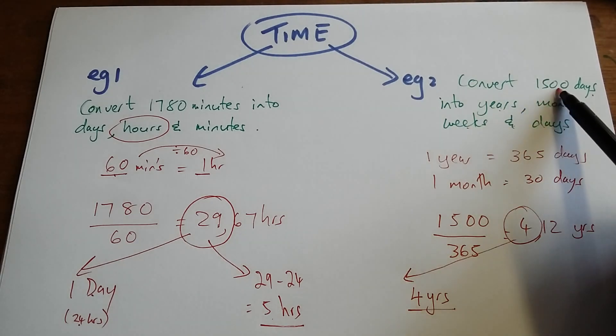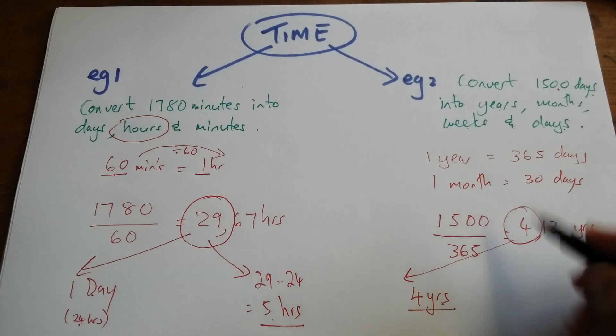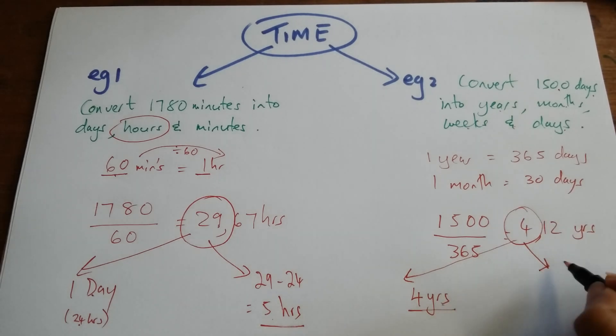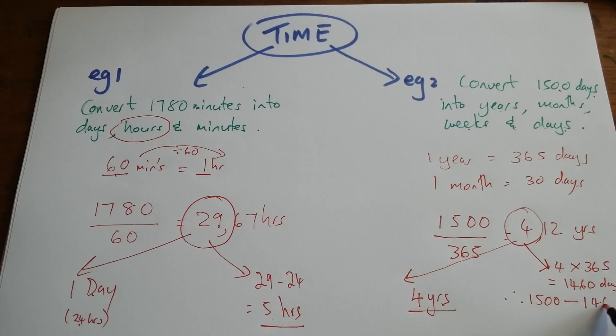So from 1500, I'm taking away 4 years, which means my balance is going to be 4 times 365, which is 1460 days. Remember, I started off with 1500 days. So I'm taking away 4 years, which is 1460, and I'm going to be left with 40 days.